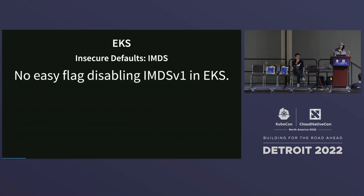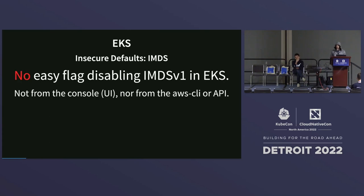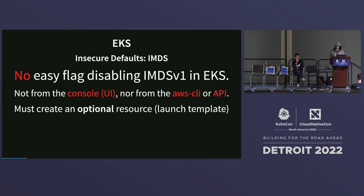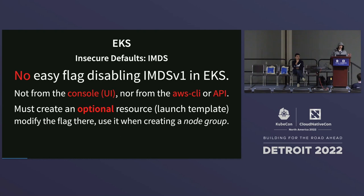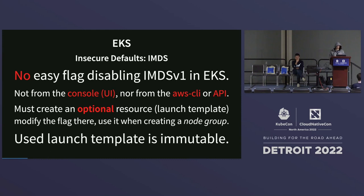Amazon offers two instance metadata service implementations: v1 and v2. The v2 version has session semantics that help protect against server-side request forgery attacks, and was introduced in November 2019. EKS uses v1 by default, which means that by default the instance metadata server is not protected against server-side request forgery attacks in EKS.